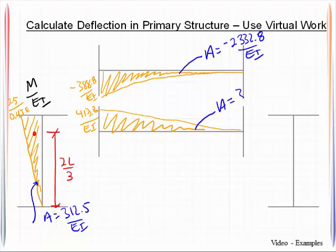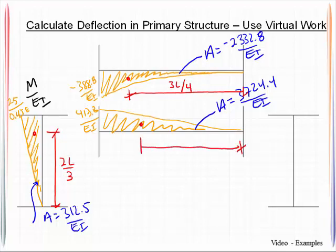In this area here, 3724.4 over EI. We will need to know where the centroids are for this. For this second order moment diagram, this is three quarters of the length over. The centroid for this is over two-thirds that distance. And then lastly, for the rightmost column, it is a zero moment in there.